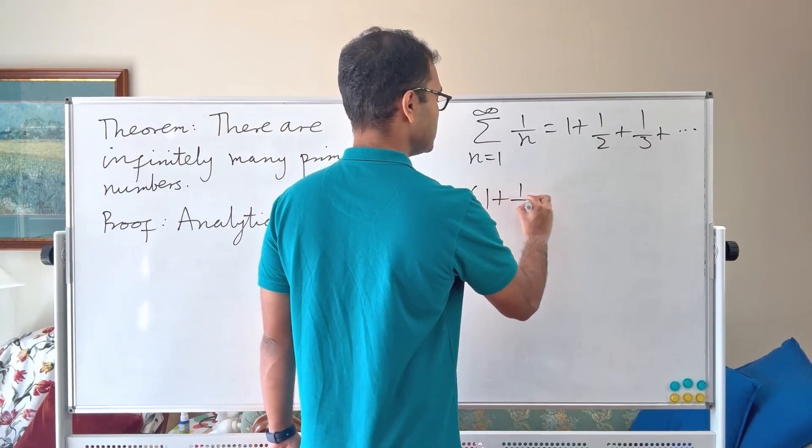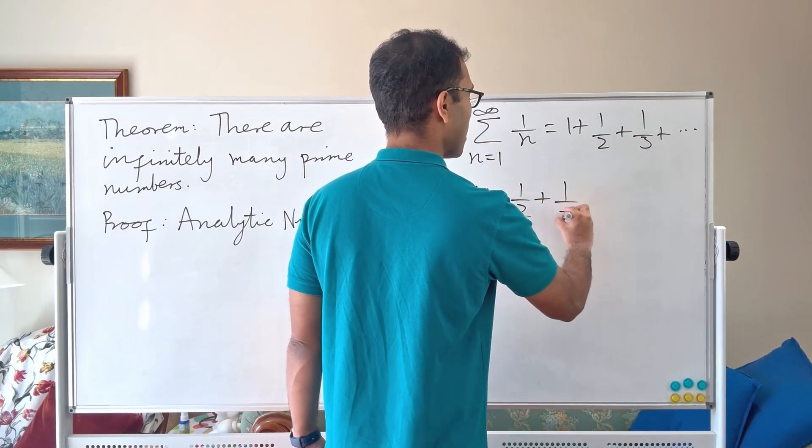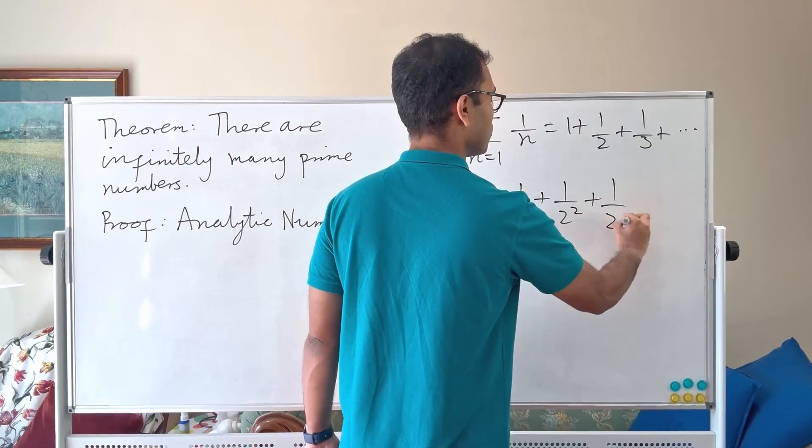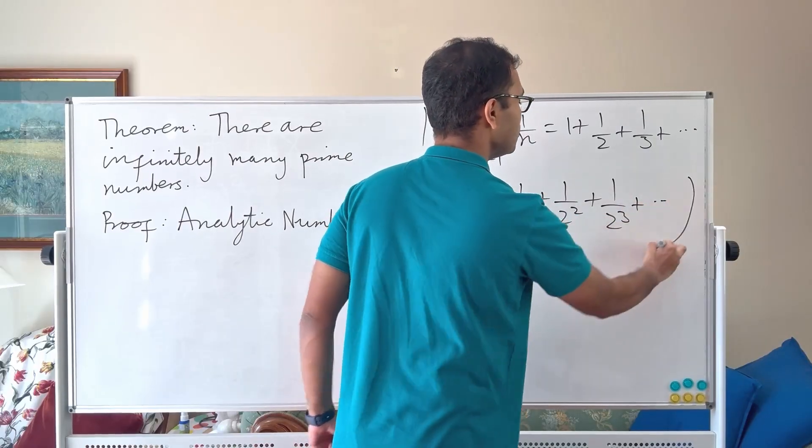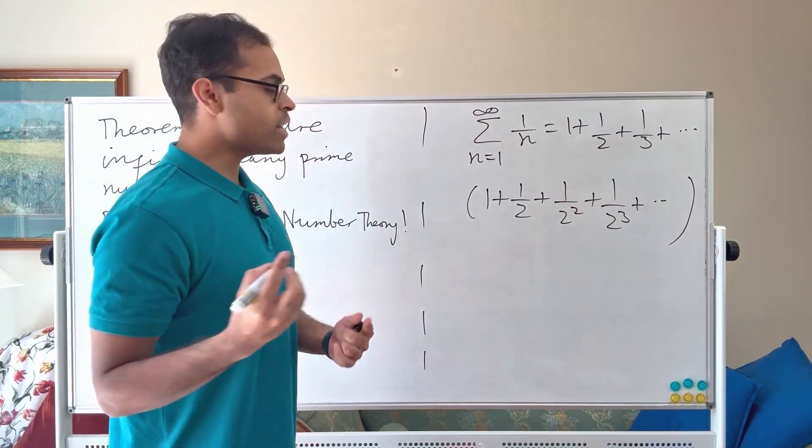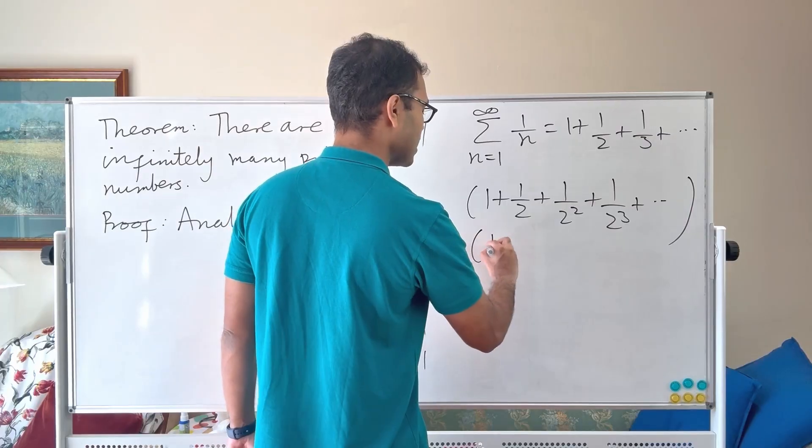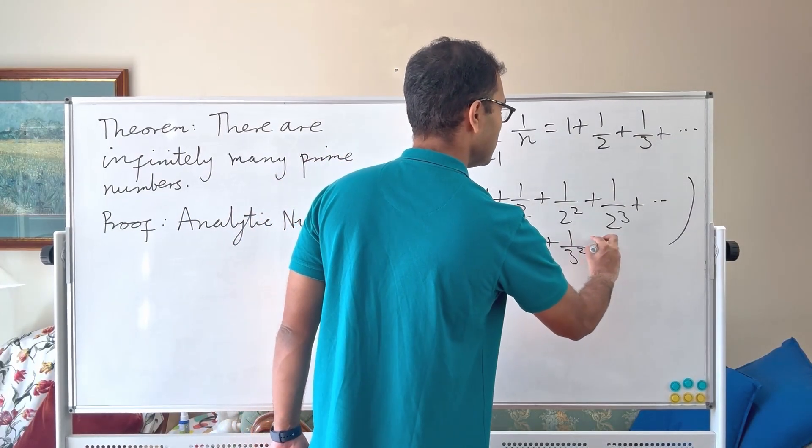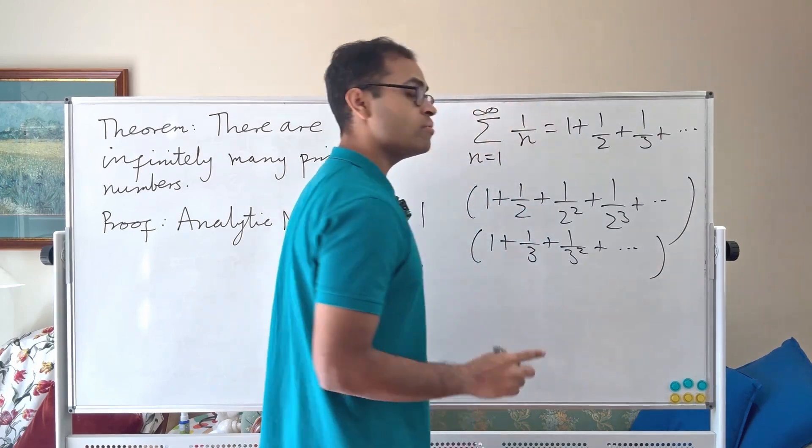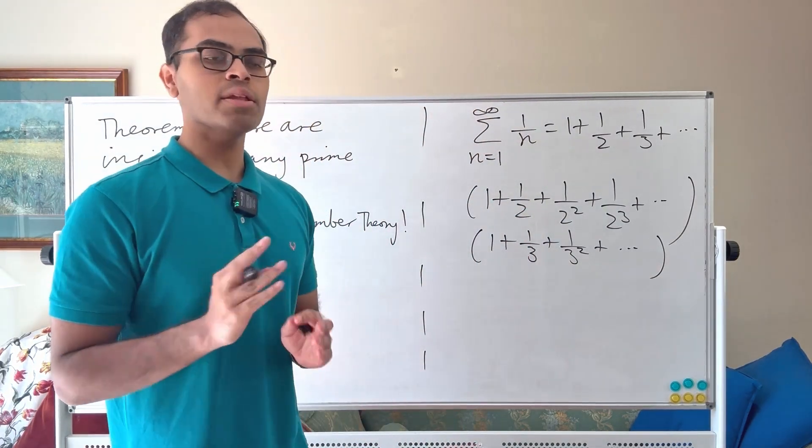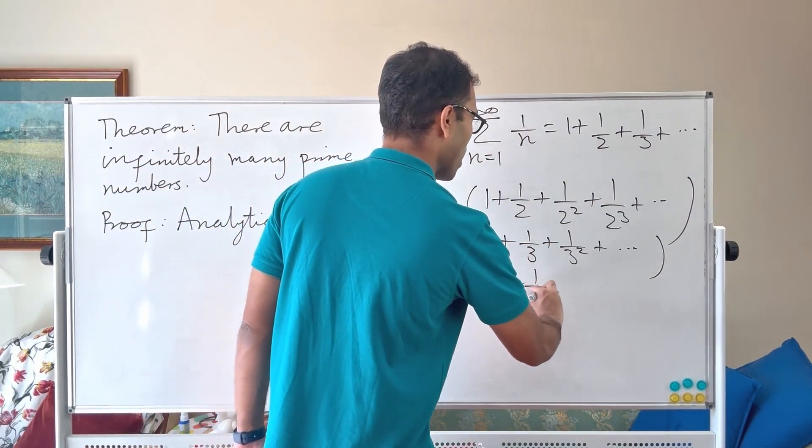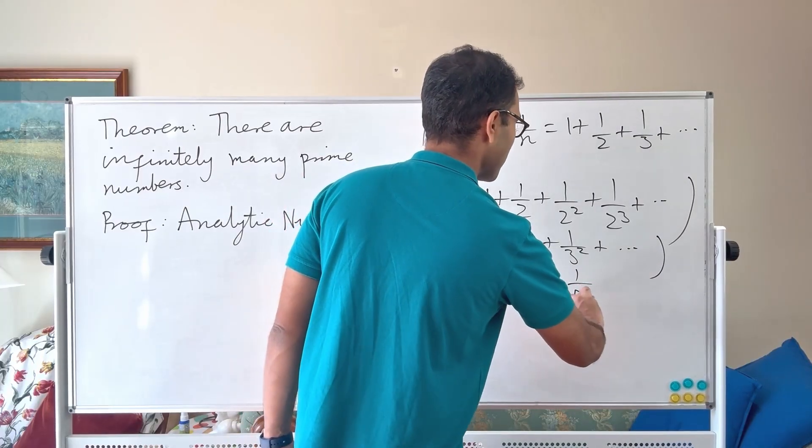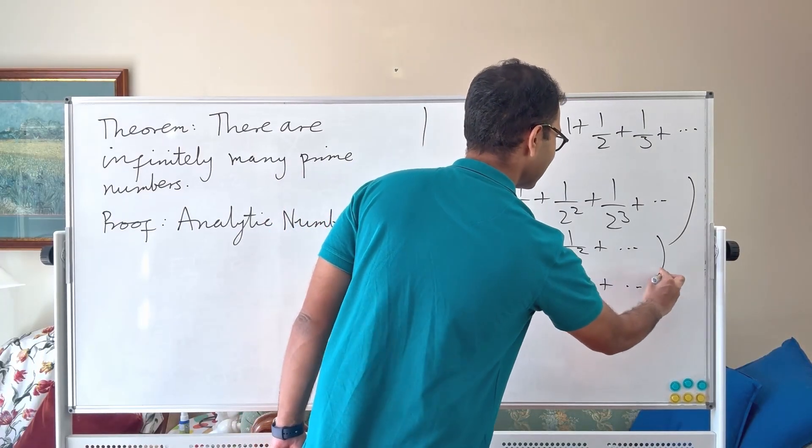Well what I'm going to do is I'm going to consider the following product. 1 plus half plus 1 over 2 squared plus 1 over 2 cubed etc. So of course this is a sum. I'm going to multiply it with another sum. 1 plus 1 over 3 plus 1 over 3 squared etc. I'm going to go through all the prime numbers. So the next one is going to be 5. 1 plus 1 over 5 plus 1 over 5 squared plus dot dot dot etc.